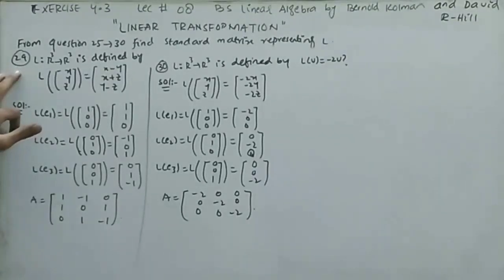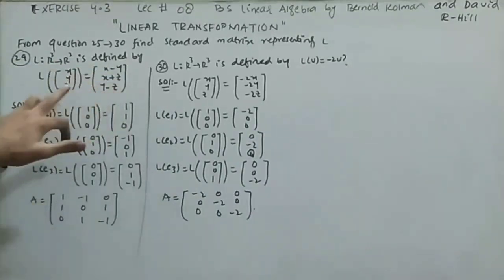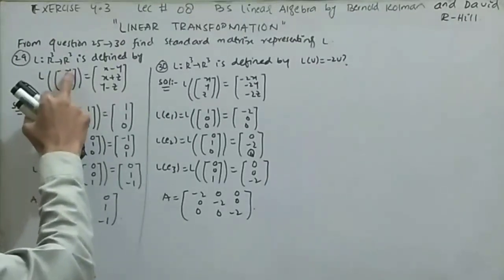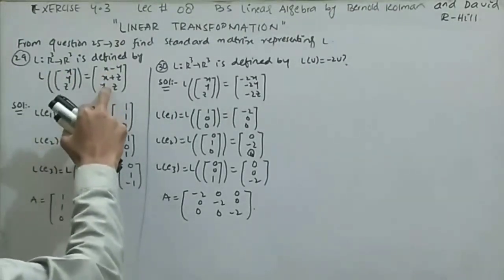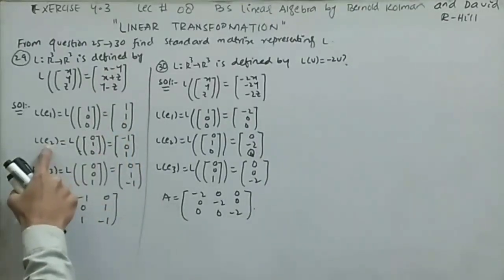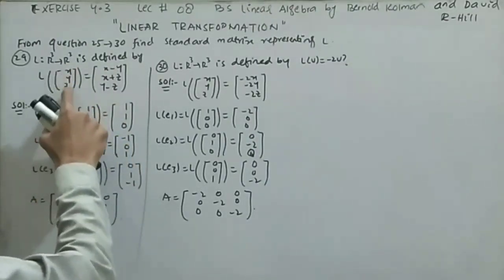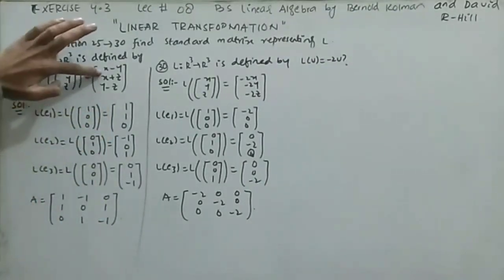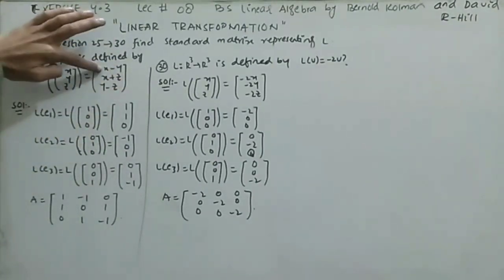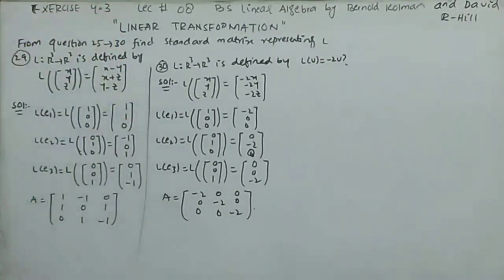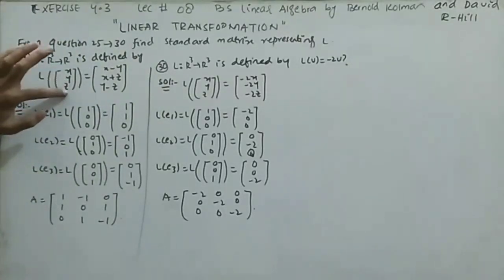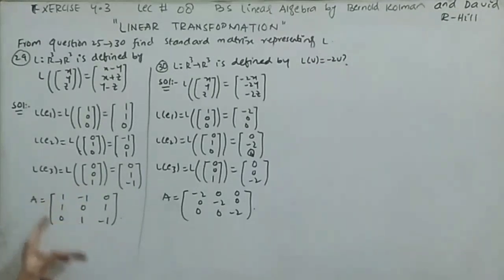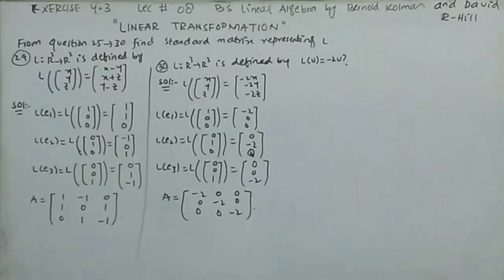Question 29: L is from R³ to R³ defined by L(x,y,z) = (x-y, x+z, y-z). For column 1: set x=1, y=0, z=0 → L(e₁) = (1, 1, 0). For column 2: set y=1, x=0, z=0 → L(e₂) = (-1, 0, 1). For column 3: set z=1, x=0, y=0 → L(e₃) = (0, 1, -1). The standard matrix is A = [1,-1,0; 1,0,1; 0,1,-1].